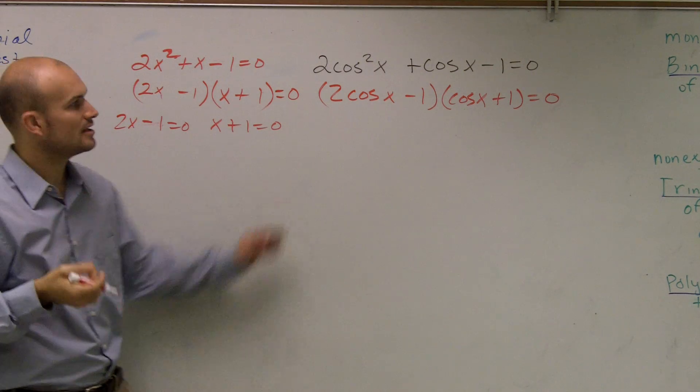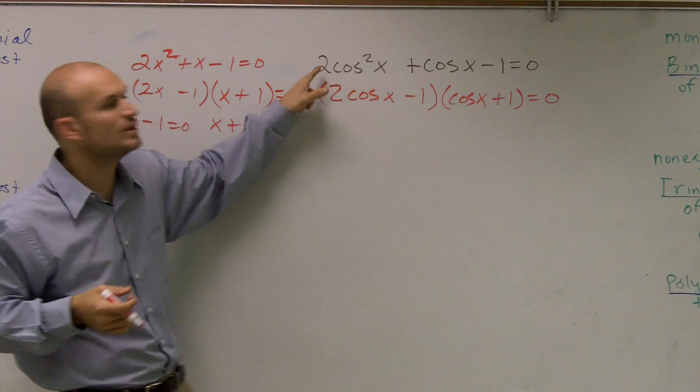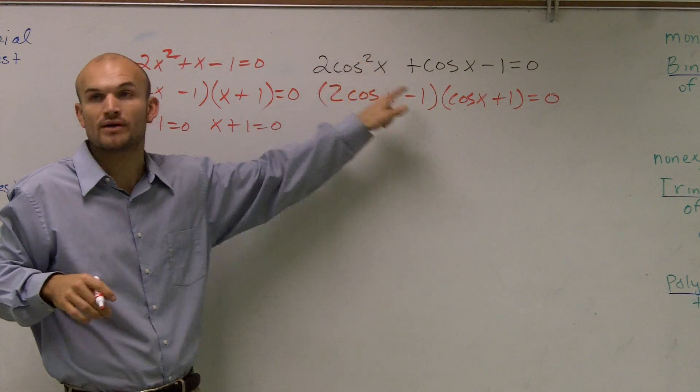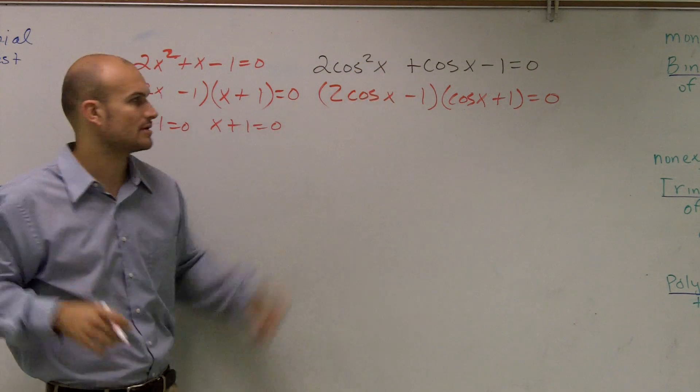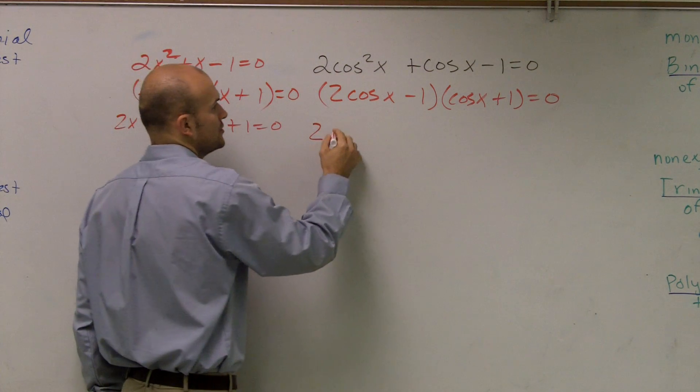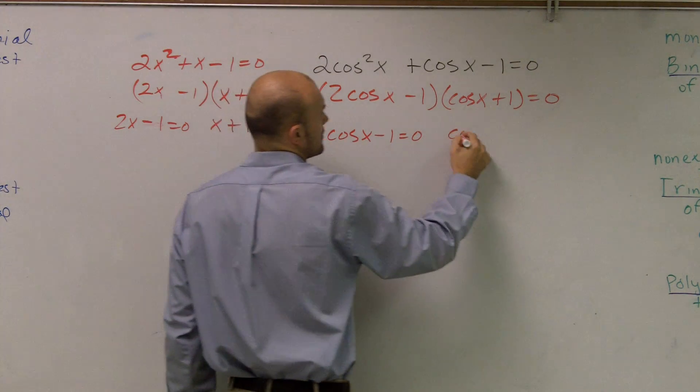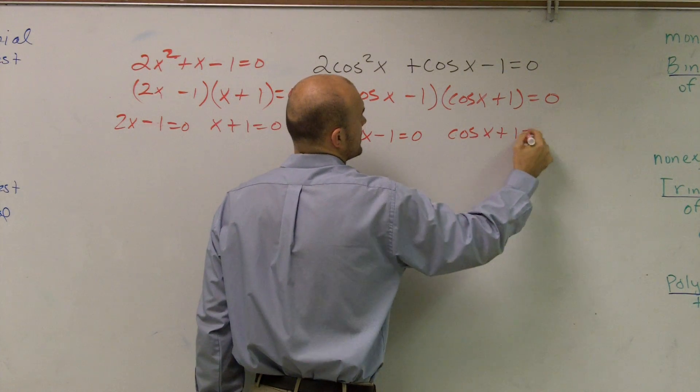And again, if you look at this, Tessa, when you multiply this through, 2 cosine of x times cosine of x is going to provide you 2 cosine squared of x. OK? So this does work. Now, just like over here, I can use a zero product property to say 2 cosine of x minus 1 equals 0, and cosine of x plus 1 equals 0.